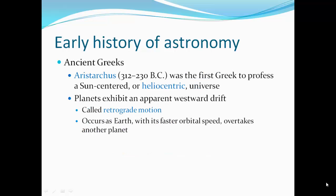Aristarchus, who lived 312 to 230 BC, was the first Greek to profess a sun-centered or heliocentric universe. The planets exhibit an apparent westward drift called retrograde motion. It occurs as Earth, with its faster orbital speed, overtakes other planets.